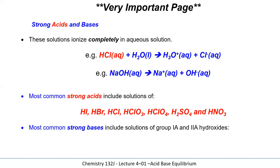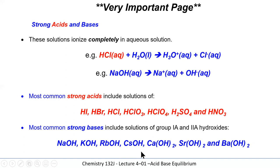Similarly, the strong bases are Group 1 and Group 2 hydroxides: sodium, potassium, rubidium, cesium hydroxides, and calcium, strontium, and barium hydroxides — seven strong bases. Lithium hydroxide is not included because lithium's small ion size creates a strong force of attraction, so not all hydroxides are liberated. Magnesium and beryllium hydroxides in Group 2 are also not strong bases for the same reason. Any other base is a weak base. Spend time committing the strong acids and bases to memory.